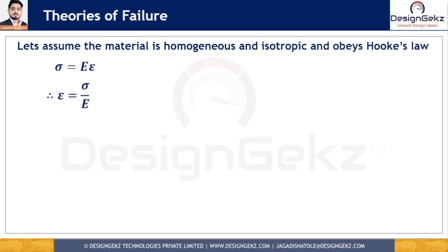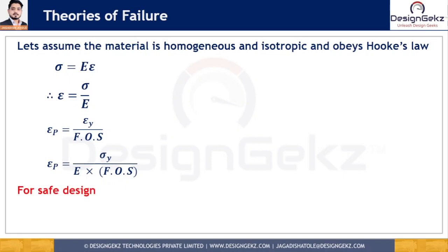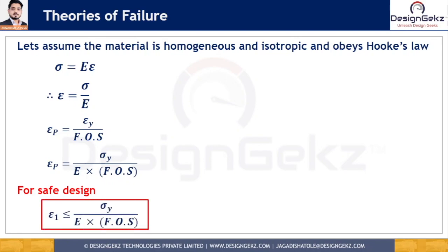If we substitute the value of epsilon into the permissible strain equation — where permissible strain epsilon p equals yield strain divided by factor of safety — we get: permissible strain equals yield stress divided by E times factor of safety. For safe design, epsilon 1, which is the maximum strain in the body, should be less than the permissible strain.